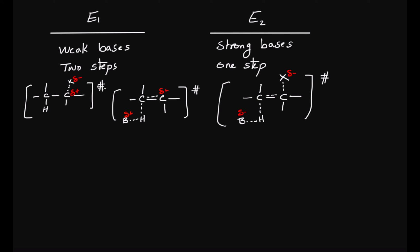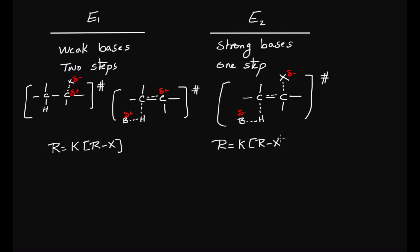Since E1 happens in two steps and the first step — formation of the carbocation — is the rate-determining step, the rate law expression is: rate = k × [alkyl halide]. So the rate of E1 elimination depends only on the concentration of the alkyl halide. However, the rate law for E2 depends on the concentrations of both the alkyl halide and the base.